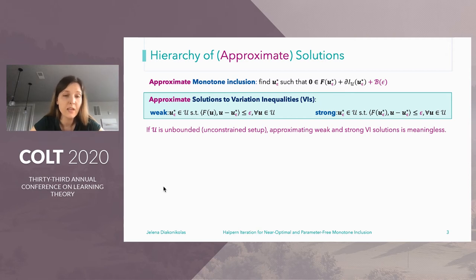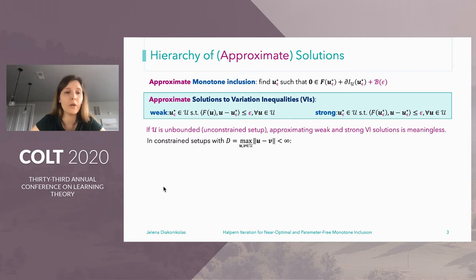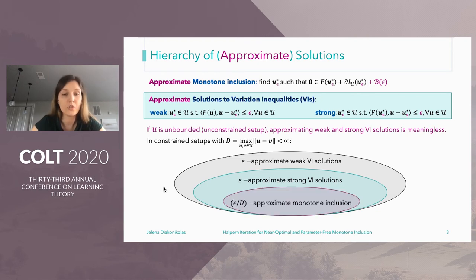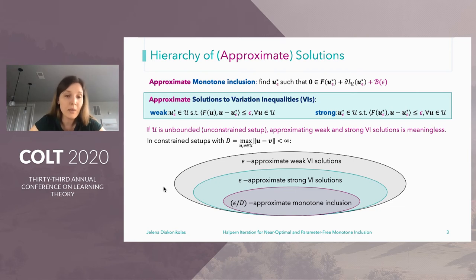Note that in this case, approximate monotone inclusion is still well defined — we can still find epsilon-approximate solutions for arbitrarily small but non-zero epsilon. For constrained setups where the diameter D of the set is bounded, the set of epsilon-approximate weak VI solutions contains the set of epsilon-approximate strong VI solutions, which in turn contains the set of epsilon-approximate solutions to monotone inclusion. This means monotone inclusion is the most general problem, and as a byproduct of our results, we will also get guarantees for strong and weak VI solutions.